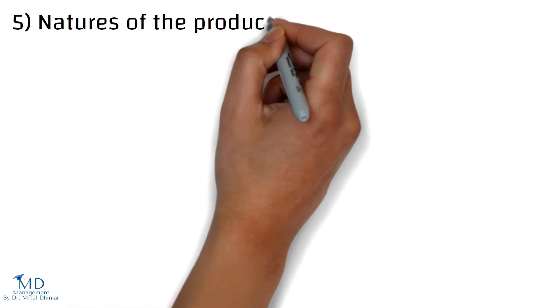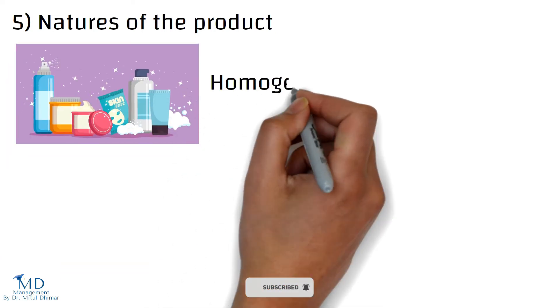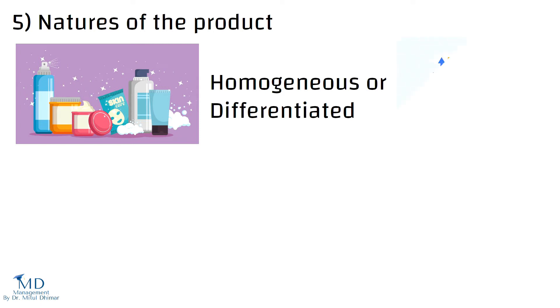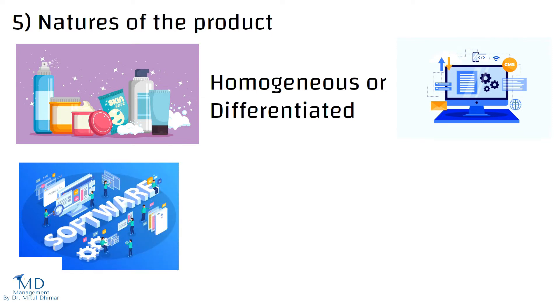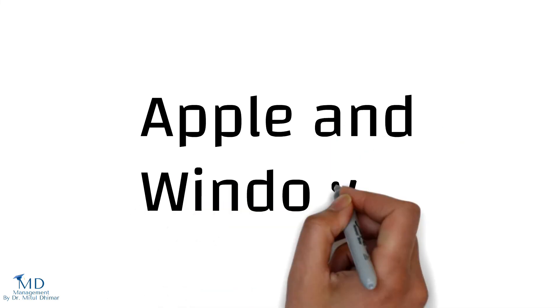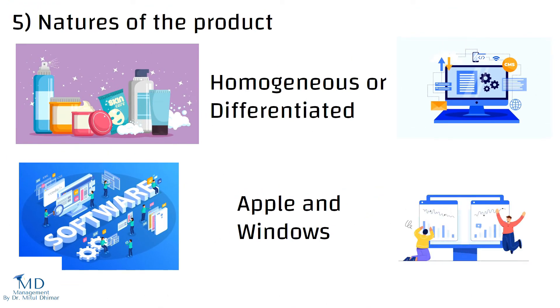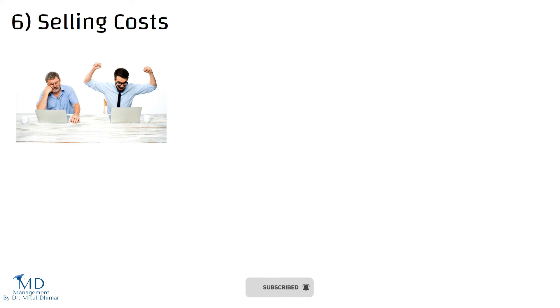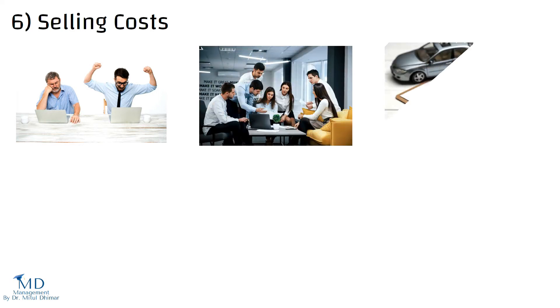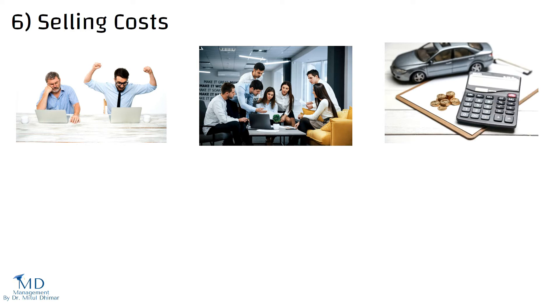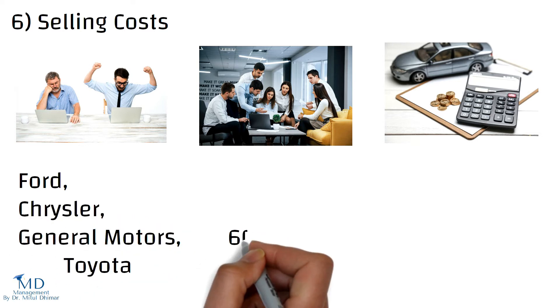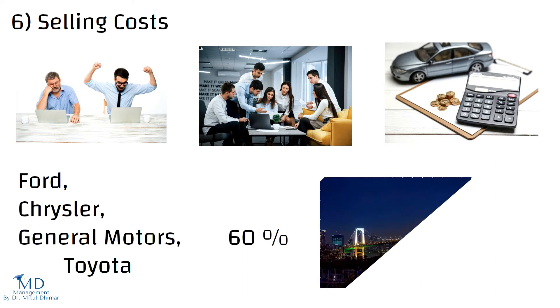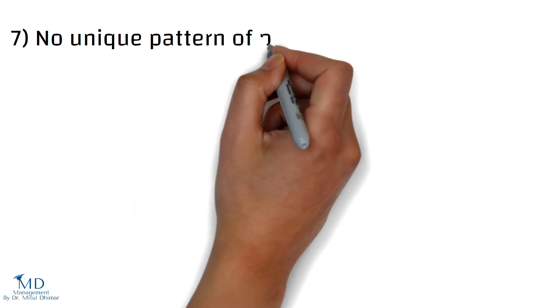Fifth, nature of the product. Under oligopoly, the products of the firms are either homogeneous or differentiated. The computer technology sector shows us the best example — under computer operating software, two prominent names come up: Apple and Windows. These two players have managed the majority of the market share. Sixth, selling costs. Since firms try to avoid price competition and there is huge interdependence among firms, selling costs are highly important for competing for a larger market share. Ford, Chrysler, General Motors, and Toyota have a collective market share of close to 60% in the US and they avoid price competition.